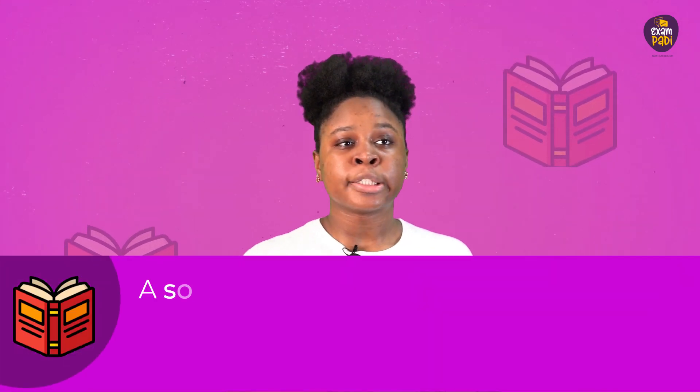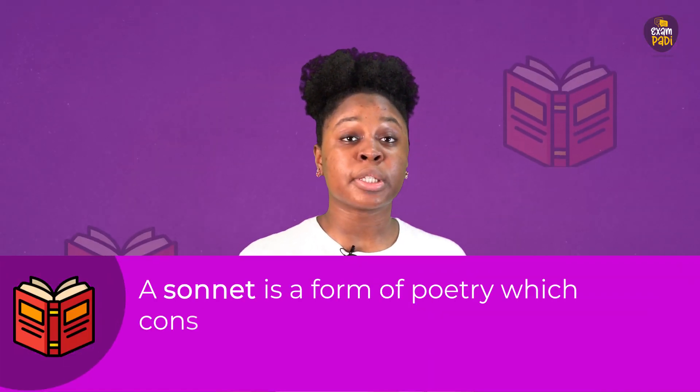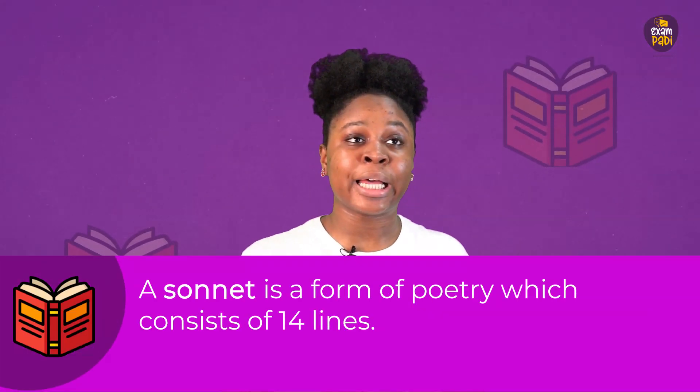Well, a sonnet is a form of poetry which consists of 14 lines. In the early 13th century, an Italian poet named Giacomo Dallantini created sonnets, and later on, sonnets were popularized by another Italian named Petrachan. English poets like William Shakespeare also made sonnets more popular on a broader scale.